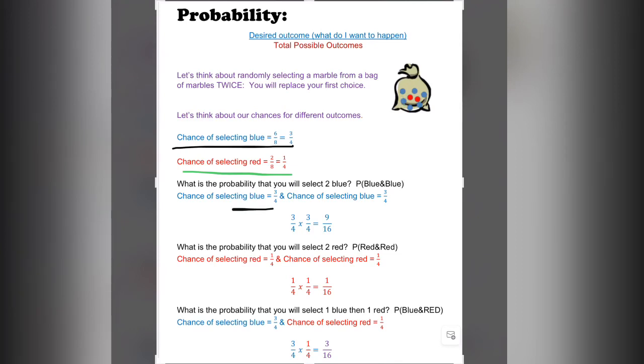Now I need to know the probability of selecting 2 blue. We already decided that selecting blue is 3 out of 4. If I put it back and try again, it's still 3 out of 4. This time, we multiply: 3/4 times 3/4 equals 9 out of 16.